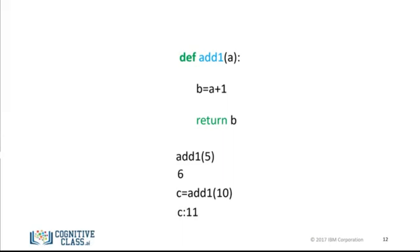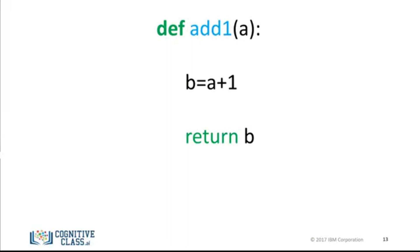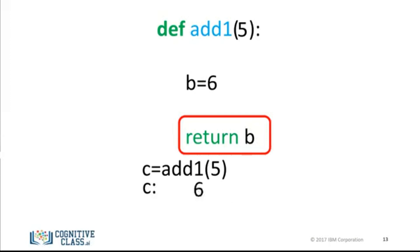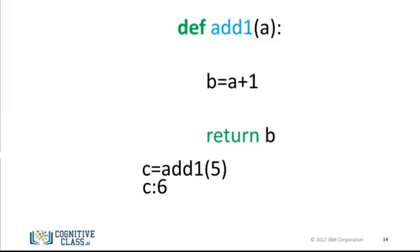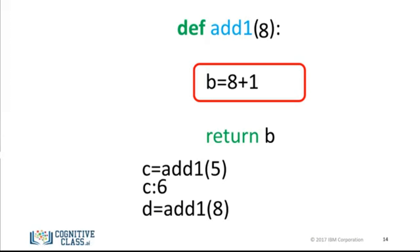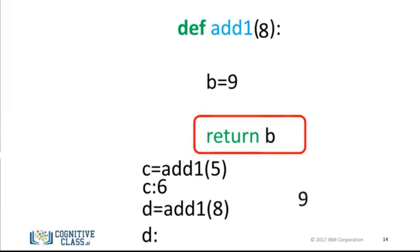Let's go over an example of when you call a function. Note that this is a simplified model of Python. We call the function, giving it an input 5. The value of 5 is passed to the function. The sequences of commands are run. The value of a is 5, and b would be assigned a value of 6. We then return the value of b — in this case, 6. If we call the function again, the process starts from scratch. We pass in an 8. The subsequent operations are performed with a different value of a. The function returns 9. Again, this is just a helpful analogy.